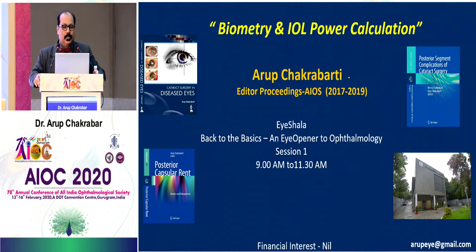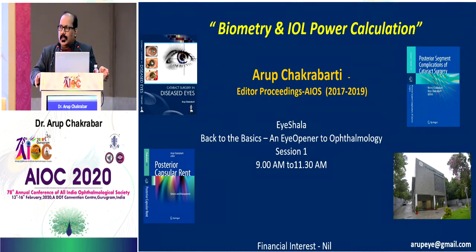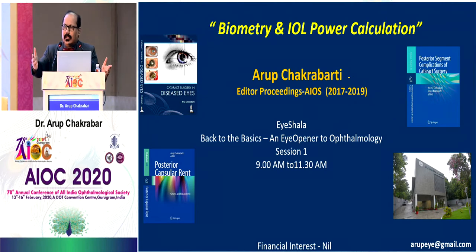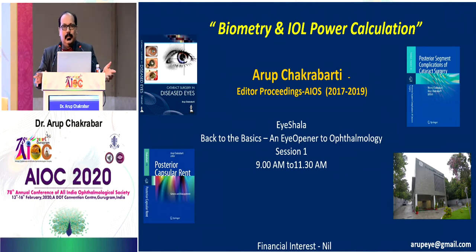Good morning friends, and a big thank you to AIOS, Dr. Rashmin, and Dr. Santosh for having me here. The topic allotted to me is biometry and IOL power calculation. I'll start with a clinical question: I have done a cataract surgery that went off extremely well. On the first post-operative day, the patient has a crystal clear cornea, the lens is well-centered, nothing wrong with the posterior segment, and the patient still cannot see well. The patient is very disturbed. What do you think is the potential cause for this poor vision?